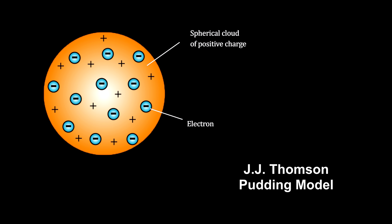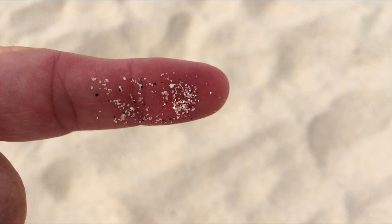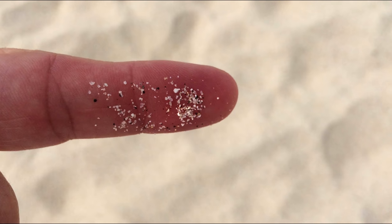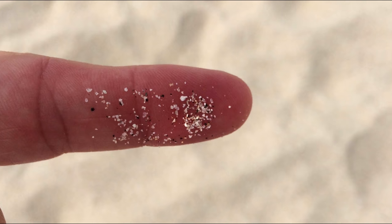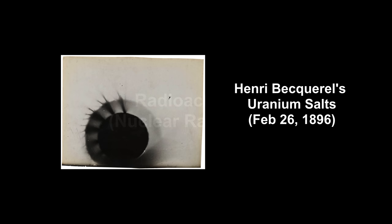A way to find out if this model is correct or not is to probe the pudding. But you need to probe with something smaller than the object being probed. For example, you can't probe a grain of sand with your finger. In 1898, there simply wasn't anything smaller than atoms that could be used to probe an atom. But around that time, radioactivity was discovered by the French scientist Henri Becquerel. Using uranium salts, he was able to blacken a photographic plate. Here's a photograph of the plate. Further research by Becquerel, Rutherford, Curie, and others discovered three types of radiation.